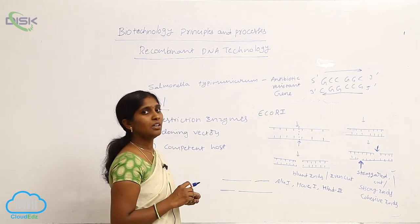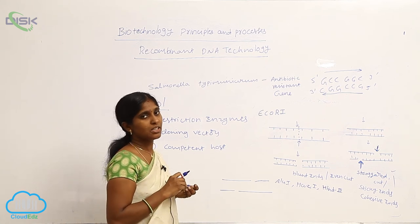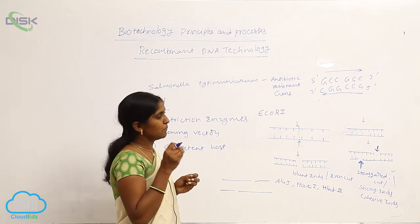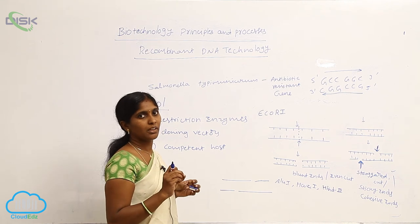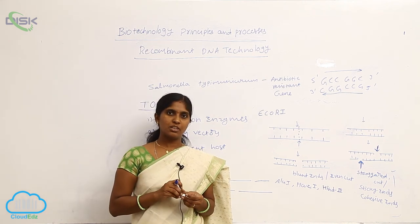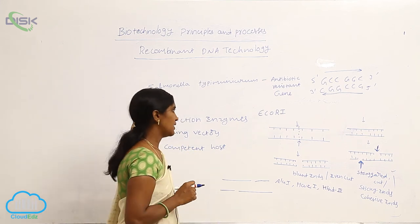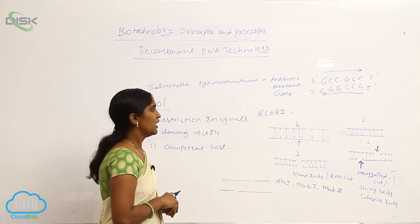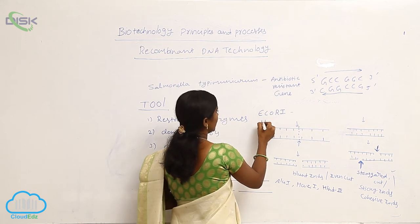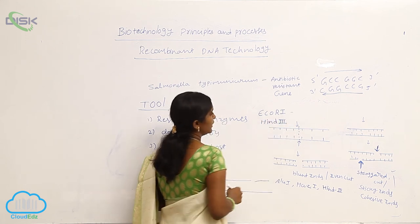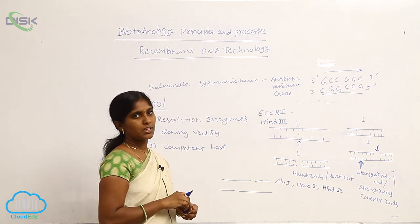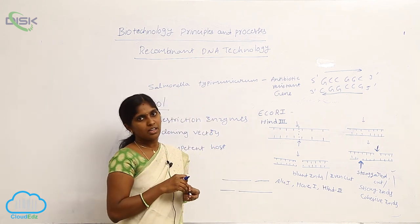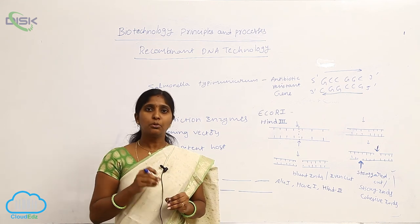So both staggered cuts and blunt-end cuts are made by restriction enzymes. Some examples: EcoRI is isolated from Escherichia coli bacterium, and HIND III is isolated from Haemophilus parainfluenzae. Different restriction enzymes isolated from different organisms may cut at different levels.